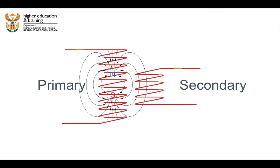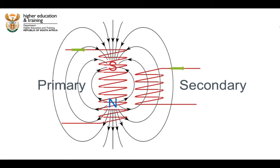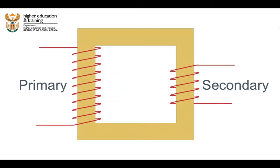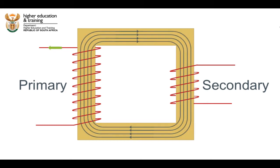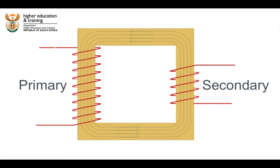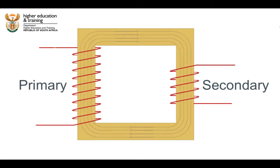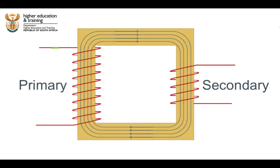Therefore, this changing magnetic field induces a voltage across a current in the secondary coil. Also, to strengthen the magnetic coupling between the coils, both coils are wound around the same ferromagnetic material. The fluctuating magnetic field generated by the primary coil is concentrated by the ferromagnetic core and induces an EMF in the secondary coil.